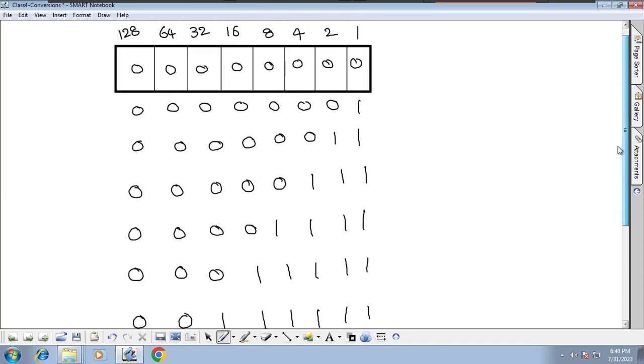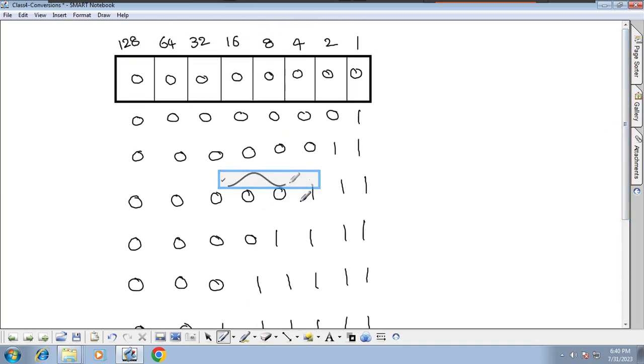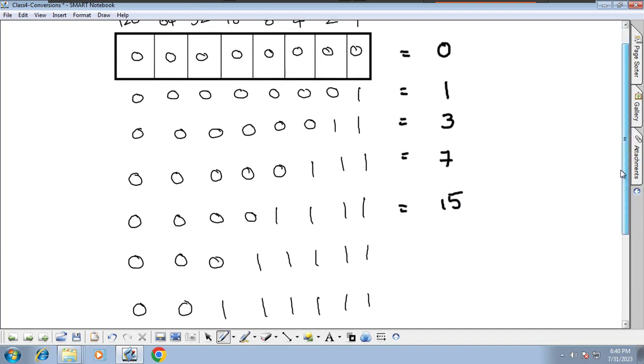In this table, what we do - if you put all zeros, this is 0. If only this is one, that's 1. What about two plus one? That's 3. Four plus two plus one equals 7. Eight plus four plus two plus one equals 15.